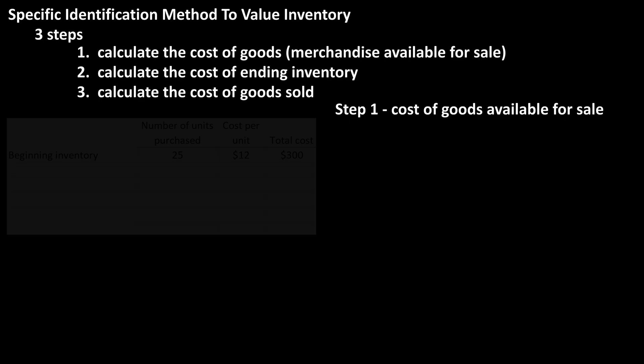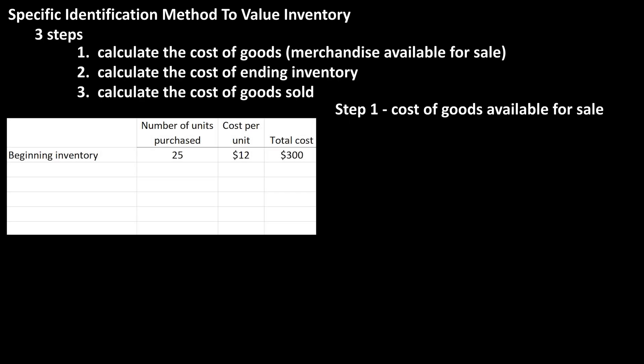For step one, the beginning inventory had 25 items at a cost of $12 per unit, which has a total cost of $300. Their first purchase of the item was on March 1st for 15 units at a cost of $15 per unit, for a total cost of $225.